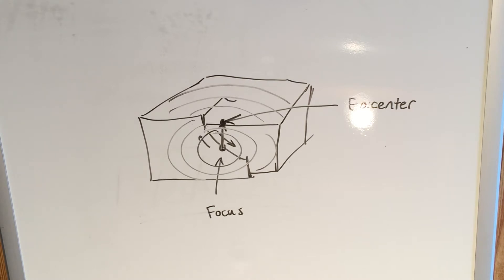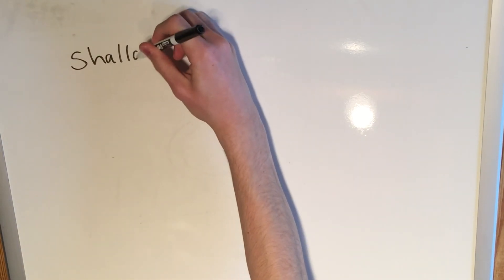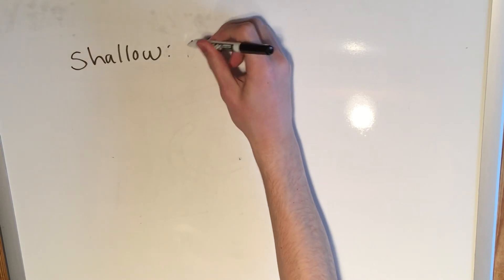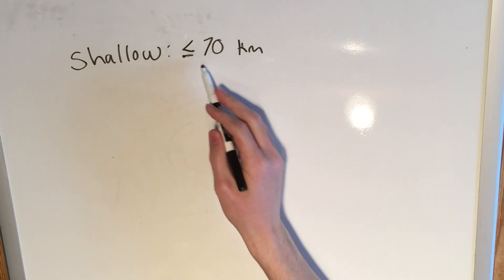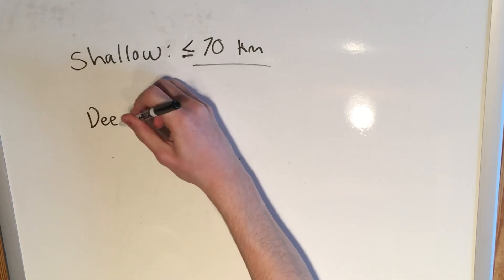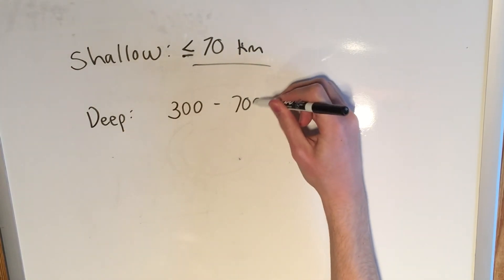One final piece to cover here is the difference between a shallow focus earthquake and a deep focus earthquake. Sometimes you'll also hear the term intermediate focus earthquake, which is just something in between these two. A shallow focus earthquake is generally around 70 kilometers or less deep within the Earth's crust — in most cases within the crust itself. A deep focus earthquake, as the name implies, is significantly deeper, and can be anywhere between 300 and 700 kilometers within the Earth, which in most cases is beneath the crust.